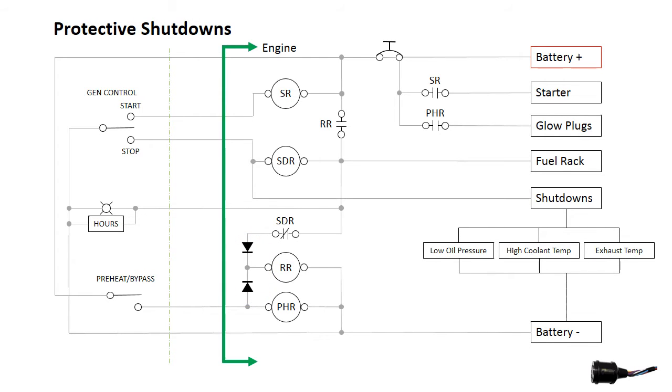The protective shutdown circuit consists of three safety switches that close to battery negative and trigger the shutdown relay when there is low oil pressure, high coolant temperature, or high temperature at the wet exhaust elbow.